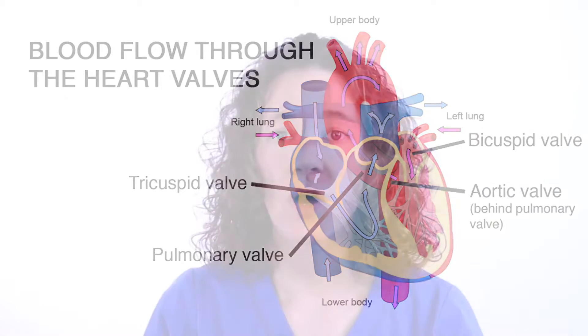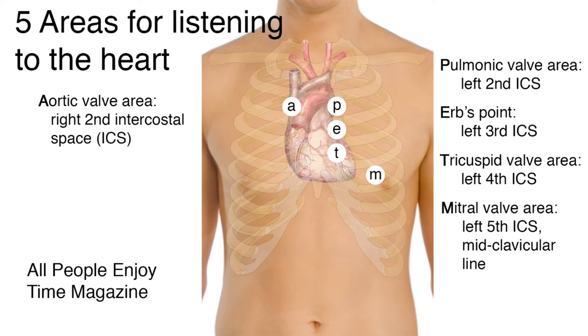Listening to the heart is accomplished by using five systematic locations on the anterior chest wall. These landmarks are the places on the chest where you can best hear sounds from each of the respective heart valves, even though they are not at the exact anatomic site. The stethoscope is positioned downstream from the flow of blood through the valves. Use the diaphragm of the stethoscope, switching to the bell to hear lower pitch sounds.